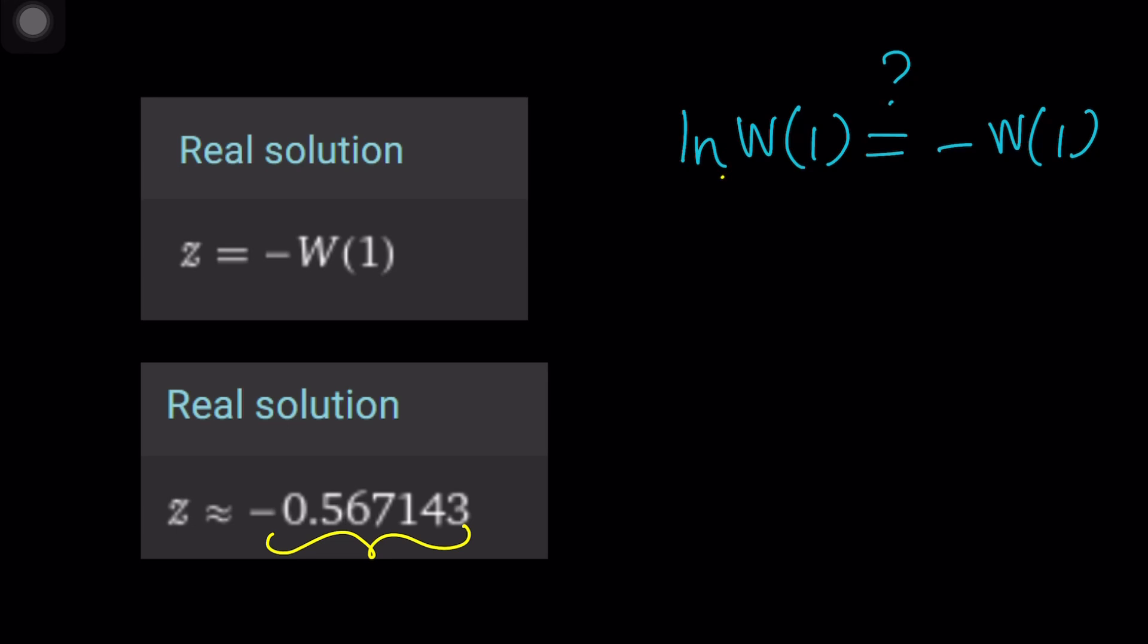So should I give you the first step? The first step should be adding W1 to both sides. You're going to get W of 1 plus LN W of 1 equals 0. That kind of looks like our equation, right? Wait a minute. What do you mean by that?